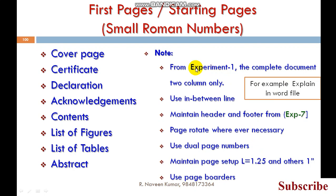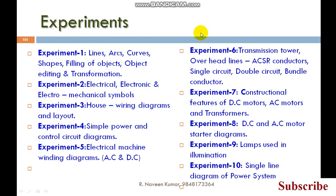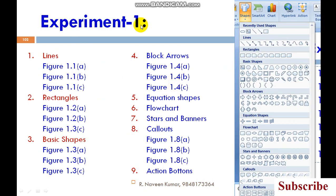For example, the first experiment I will explain in Word. All the experiments are like this: lines, arcs, curves, shapes, filling of objects. This is the first experiment. You have to dump every information. Under lines, you are having different figures. For the line, you have to give figure numbers like this.